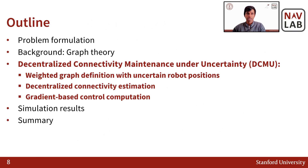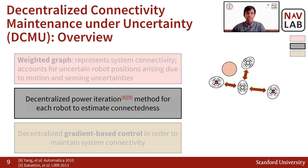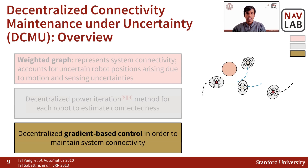Next, let's take a look at our connectivity maintenance algorithm. Our algorithm consists of three main components. We first define a weighted graph to represent the system connectivity while accounting for uncertain robot positions due to motion and sensing uncertainties, and also the line-of-sight and collision avoidance constraints. Next, we use a decentralized power iteration method, similar to previous works, where each robot communicates with its neighbors and estimates how connected it is to the rest of the system. Finally, using the information from the first two components, each robot computes a gradient-based control in a decentralized manner, where the objective is to maintain connectivity within the system.